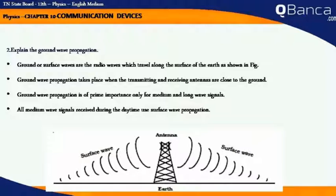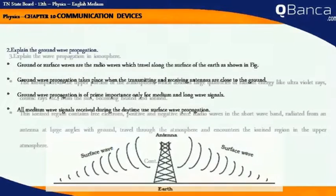Explain ground wave propagation. Ground or surface waves are the radio waves which travel along the surface of the earth, as shown in the figure. Ground wave propagation takes place when the transmitting and receiving antennas are close to the ground. It is of prime importance only for medium and long wave signals. All medium wave signals received during the daytime use surface wave propagation.